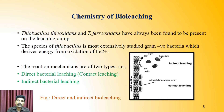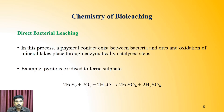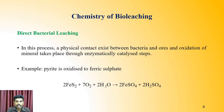This figure shows the direct and indirect bio leaching process. In direct bacterial leaching, there is physical contact between the bacteria and the ore, and oxidation of the mineral takes place through enzymatically catalyzed steps. For example, pyrite is oxidized to ferric sulphate — ferrous sulphide finally produces ferrous sulphate and sulphuric acid. This is a basic example of the direct bio bacterial leaching process.